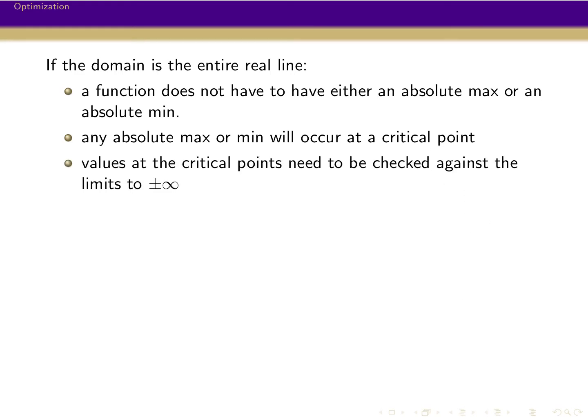The way that we find these absolute maxes or mins, we're going to check the value at all the critical points, and then we're going to compare this against what happens at the limits. So if the limit goes off to infinity, there's no possible way there's going to be a maximum. If the limit goes off to negative infinity, then there's no possible way there's a minimum.